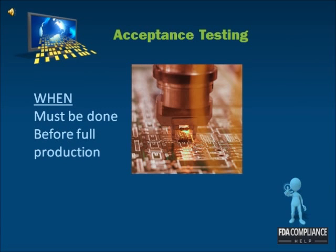Before the device is ready for full-scale production, the test and inspection decisions shall be completed and documented as test and inspection instructions or acceptance procedures, and approved for use. It is a violation of the United States Food, Drug, and Cosmetics Act to place inadequately evaluated devices into commercial distribution. It is also a violation of the Quality System Regulation to allow test and inspection procedures to evolve during ongoing production.